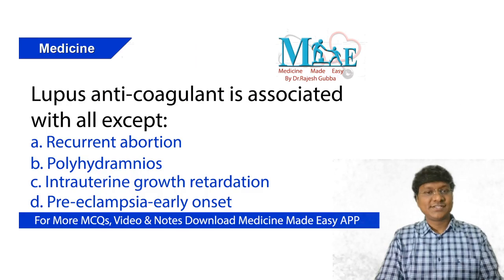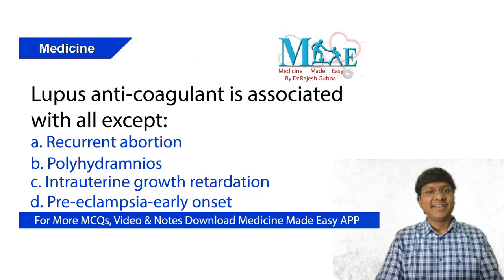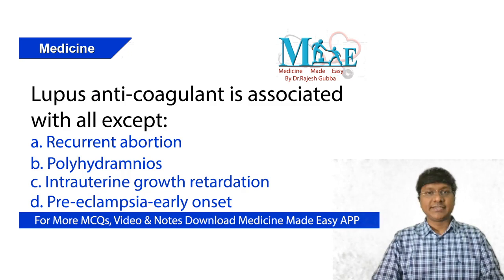As a part of today's daily dose, the question is: lupus anticoagulant is associated with all except — recurrent abortions, polyhydramnios, intrauterine growth retardation, preeclampsia of early onset.